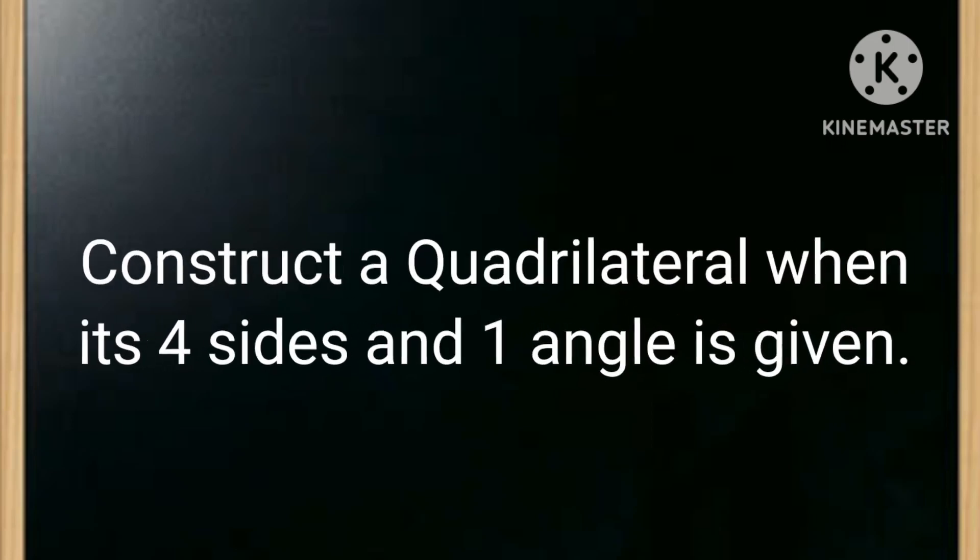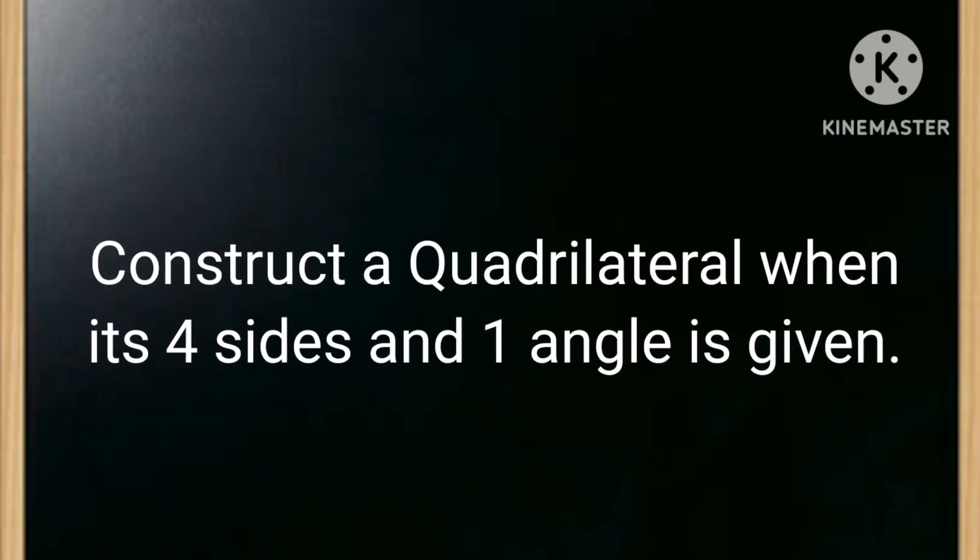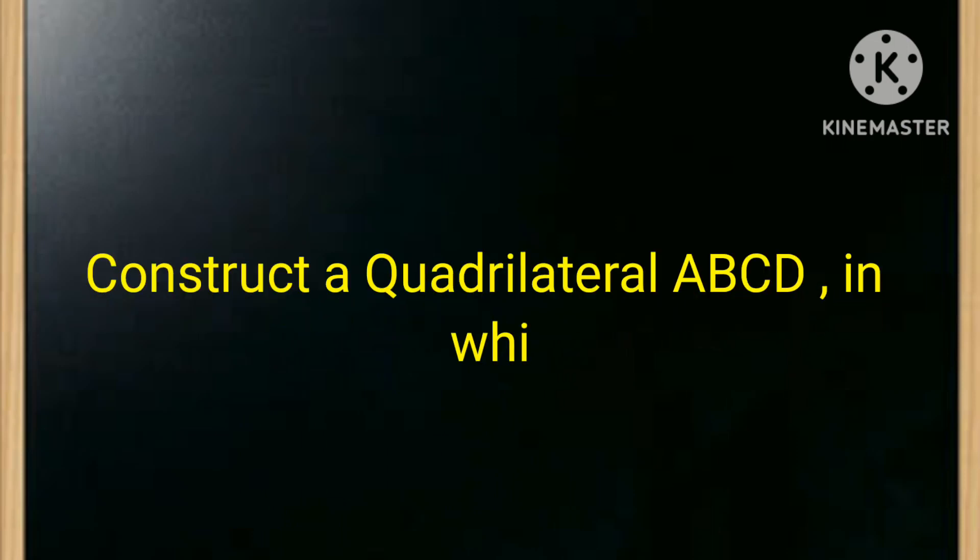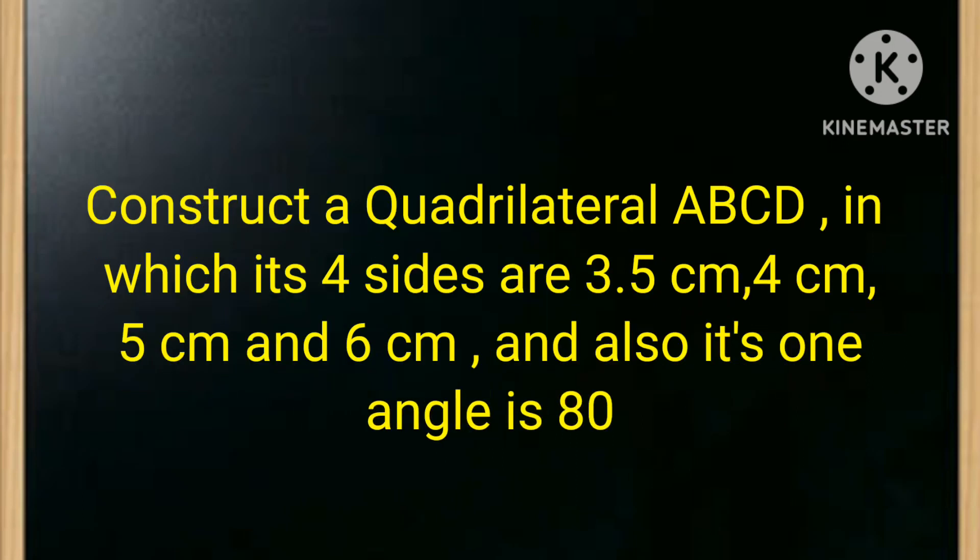Our first construction is construct a quadrilateral when its four sides and one angle is given. The instruction will be: construct a quadrilateral ABCD in which its four sides are 3.5 centimeter, 4 centimeter, 5 centimeter and 6 centimeter, and also its one angle is 80 degrees. So let's see how to draw it.